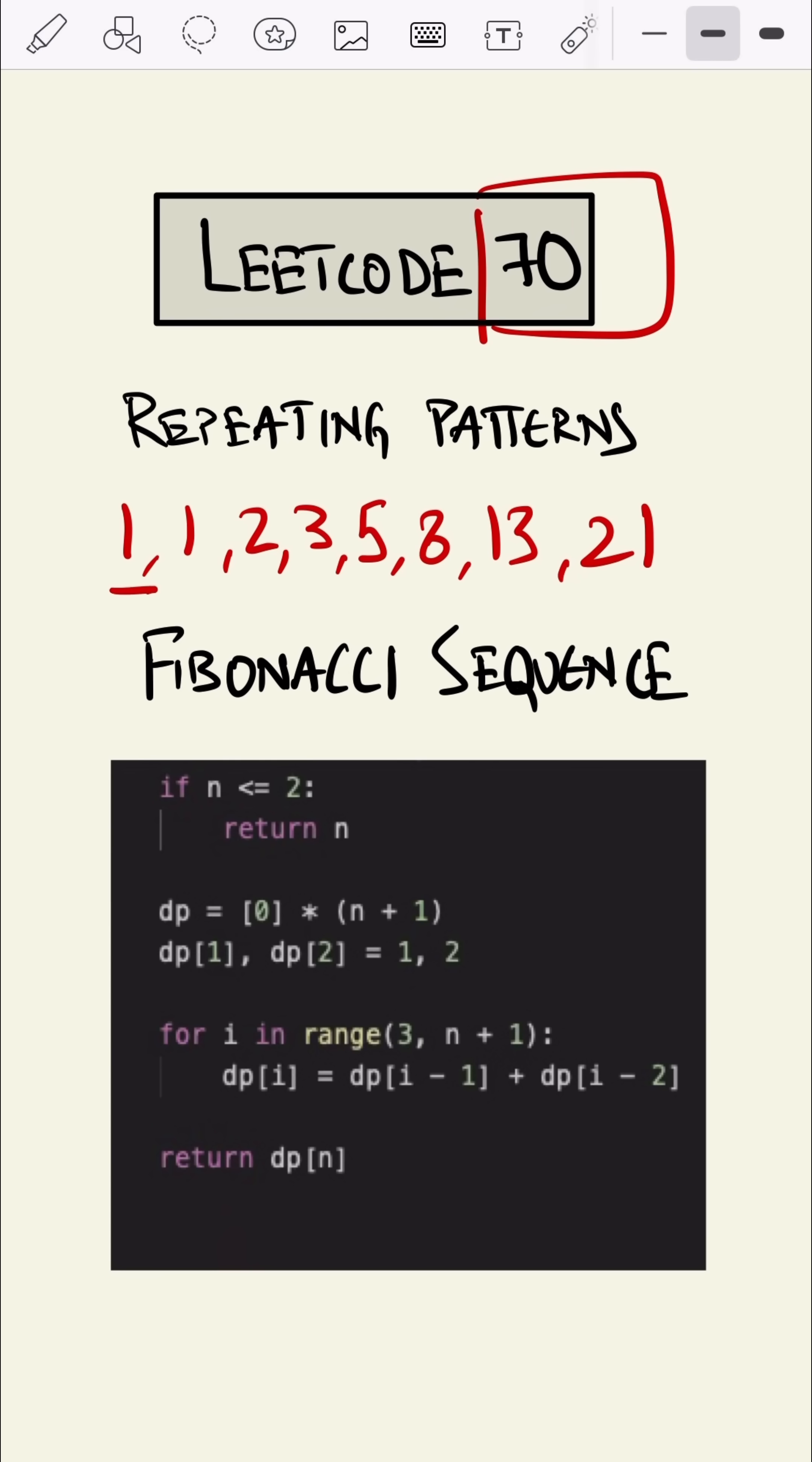Our sequence was one, one, two, three, five, eight, 13. And the next one would have been 21. This is called the Fibonacci sequence.